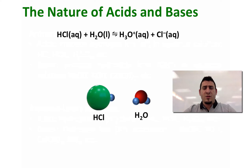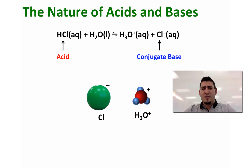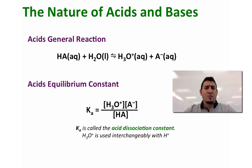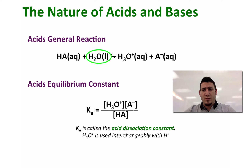Let's consider the example of the dissociation of hydrochloric acid in water. HCl will donate its hydrogen to water, so HCl is the acid and Cl⁻ is the conjugate base of HCl. Water is a base since it accepted the H⁺ from HCl, and H₃O⁺ is called hydronium. The general reaction for an acid is: HA + H₂O → H₃O⁺ + A⁻. The equilibrium dissociation constant for an acid is called Ka, equal to the concentration of H₃O⁺ times the concentration of A⁻ divided by the concentration of the acid. We omit the concentration of water from the Ka expression because water is a liquid and does not affect the equilibrium. Ka is called the acid dissociation constant, and H₃O⁺ and H⁺ are used interchangeably.